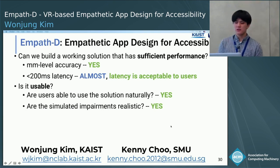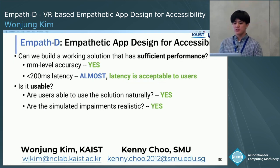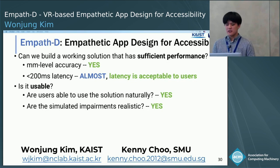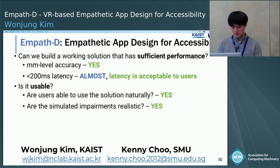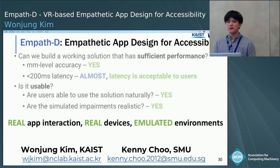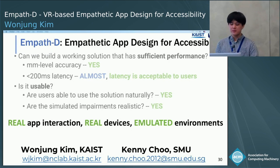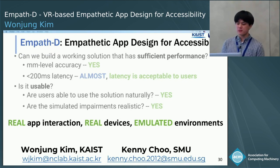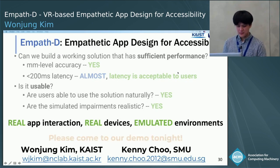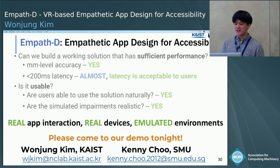Let me conclude my talk. I presented MFSD, a VR-based system that allows for empathetic design for accessibility. We achieved millimeter-level accuracy and low enough latency that is acceptable to users, such that they can interact naturally in VR. We also developed realistically simulated impairments. MFSD is about real apps, real app interaction, and real devices in emulated environments. Absent impairment simulation, MFSD can also be used to test any mobile and wearable applications under different environmental contexts, such as a vehicle dashboard application while driving. Please come to our demo tonight, and thank you. I am happy to take questions.